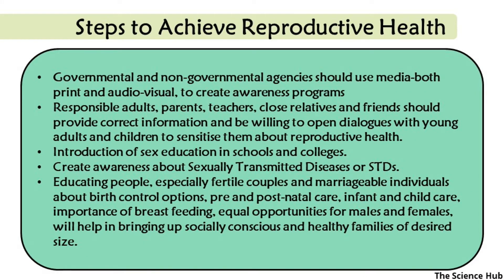Steps to achieve good reproductive health: Government and non-governmental agencies should use media — both print and audiovisual — to create awareness programs. Responsible adults, parents, teachers, relatives, and friends should provide correct information and engage in open dialogues with young adults and children to sensitize them about good reproductive health. Sex education should be introduced in schools and colleges, creating awareness about sexually transmitted diseases.